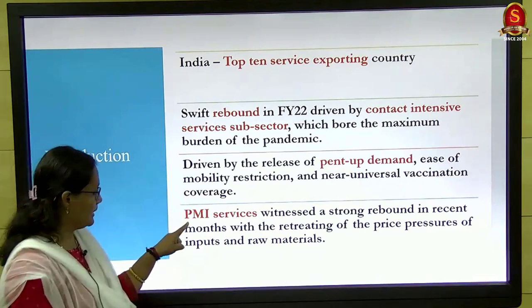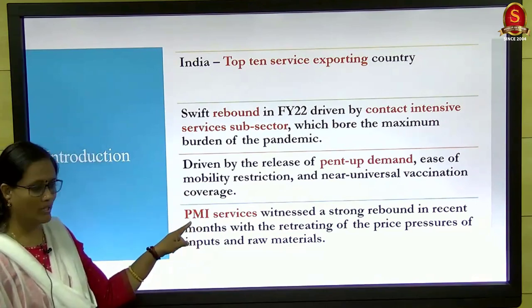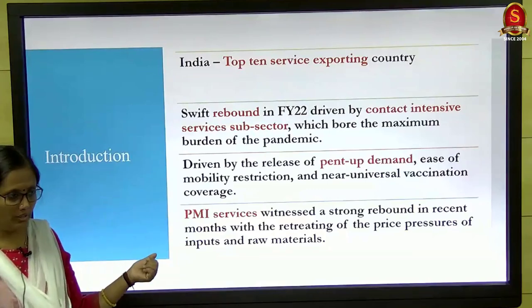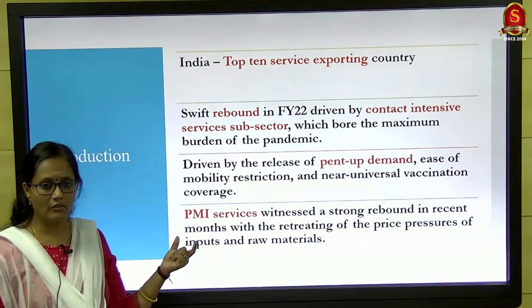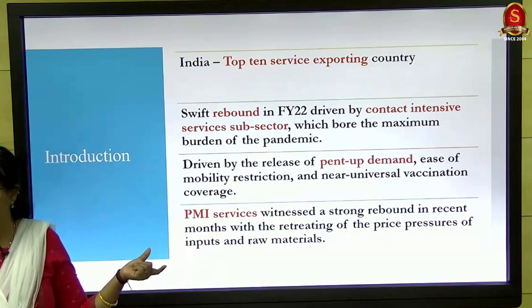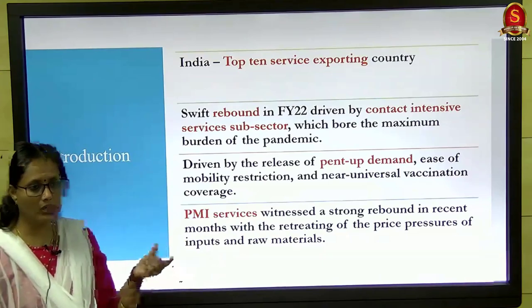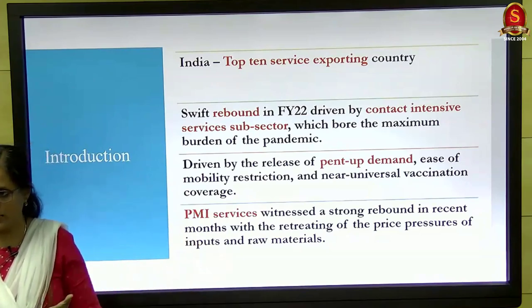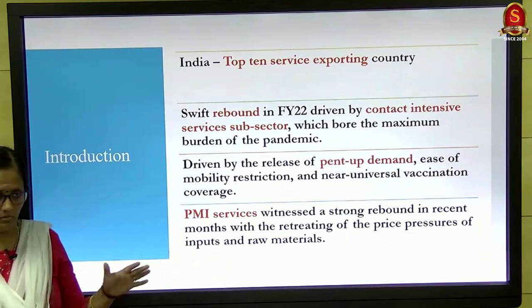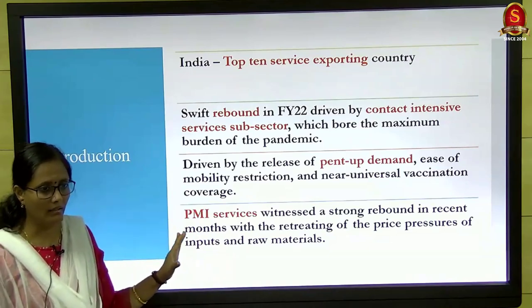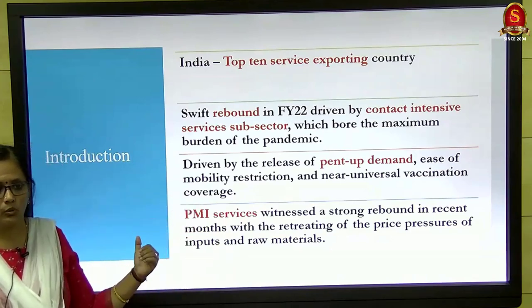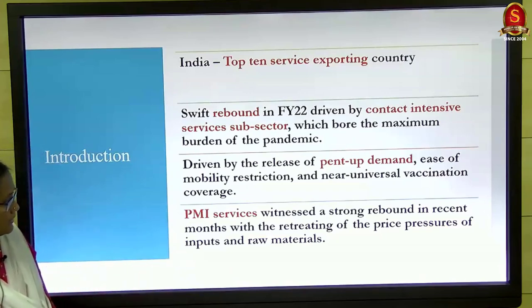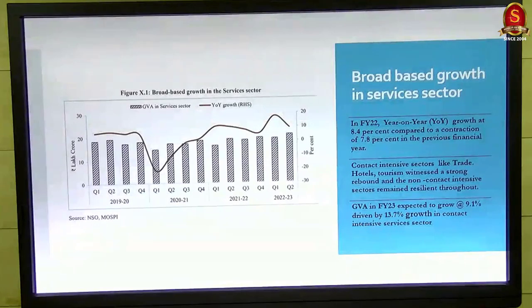We studied the Purchasing Managers Index in earlier chapters, but there is a PMI specifically for services. Whenever you see this kind of PMI index, interpret it as: if the value is more than 50, that sector is expanding; if less than 50, that sector is contracting. For services as a sector, it is now bouncing back with values going above 50. The PMI tells you whether there is demand for raw materials to provide a particular service.